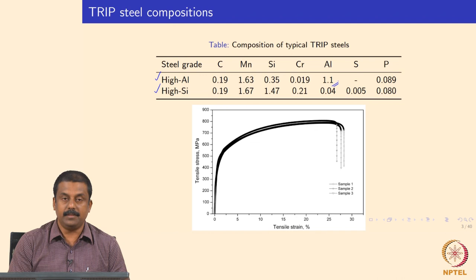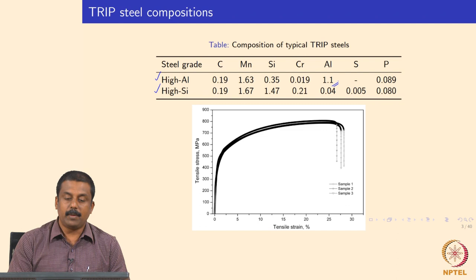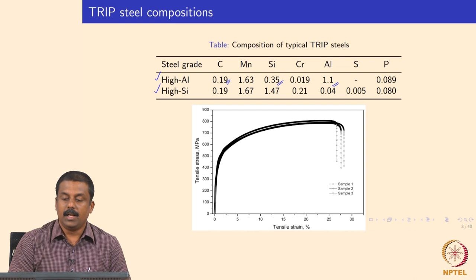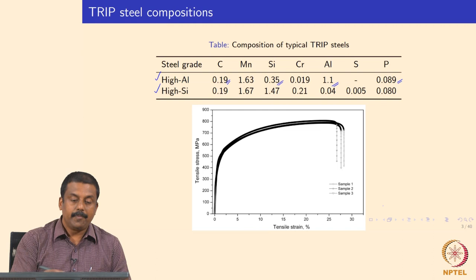In aluminum-based TRIP steel, we stabilize retained austenite by adding aluminum, typically about 1% aluminum — not more than 1.2%, for metallurgical reasons we will discuss later. Apart from aluminum, we also have about 0.2% carbon and manganese of 1.5 to not more than 1.8 in a conventional TRIP steel, with silicon reduced to a conventional level of 0.3 to 0.4, and phosphorus kept at a level that is considered safe to weld.